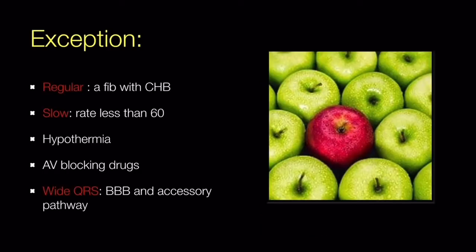Atrial fibrillation can be regular when associated with complete heart block, and it can be slow — rate less than 60 — when associated with hypothermia, AV-blocking drugs like beta blockers, calcium channel blockers, and digoxin, or complete heart block. QRS complex can be wide when associated with bundle branch block or an accessory pathway.